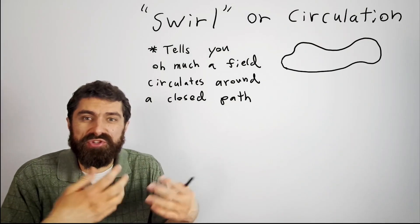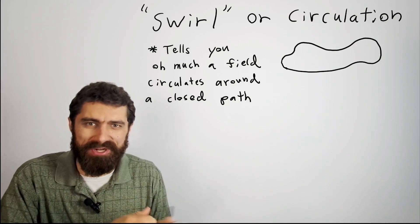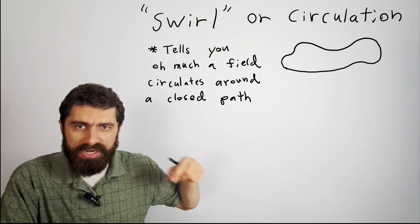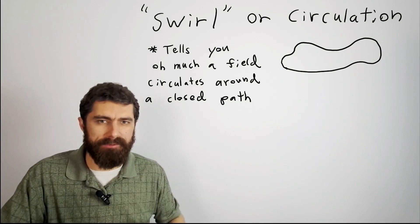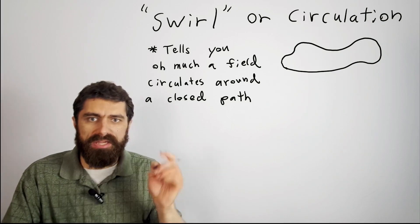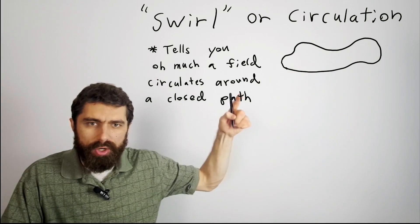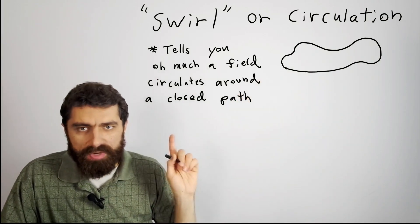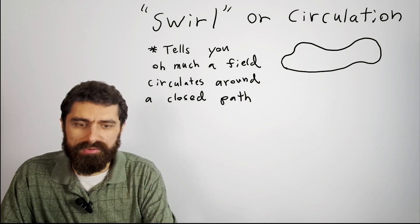We can define swirl, or circulation as it's more formally known, as a measure of how much a field circulates around a closed path. Mathematically, what we would do is take any arbitrary closed path, and if we wanted to know how much it was circulating around in a given direction, we define what is called a DL vector, or a differential length vector.